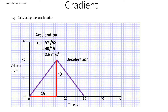To calculate a deceleration, we use the same approach. Pick two points on the line and turn them into a right-angled triangle. Measure the height and the width of the triangle. Since this line is decreasing, we're going to call the height minus 40. To calculate the gradient, we take the change in height divided by the change in width, so this is minus 40 divided by 15, which is equal to minus 2.6 meters per second squared.